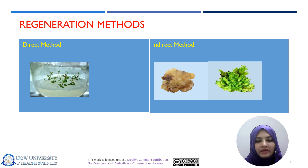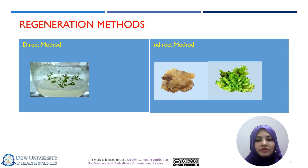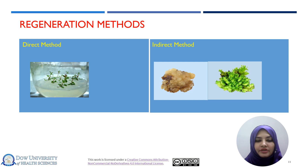In some cases, the indirect method can be used, such as callus induction — an unorganized mass of cells is first maintained. From these unorganized or undifferentiated cells, regeneration can be done. This is called the indirect method. This method can be used for several purposes, but mostly for protoplast cultures; the direct method of regeneration is performed in in vitro propagation.